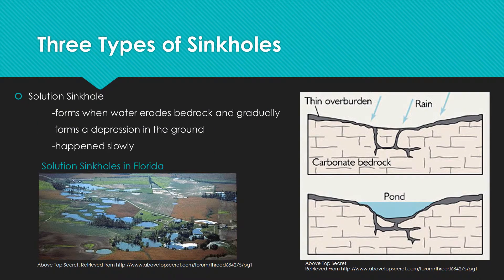There are three types of sinkholes: solution sinkholes, cover subsidence sinkholes, and cover collapse sinkholes. A solution sinkhole is formed when groundwater becomes concentrated in an area with nowhere to flow. This is often the result of heavy precipitation, as seen in the diagram. It settles on the surface of the land, where it gradually dissolves the surface layers and a depression is formed.